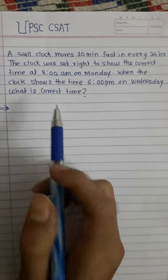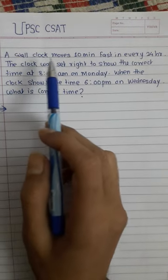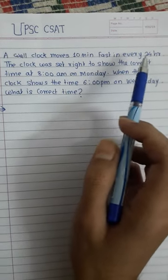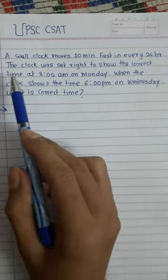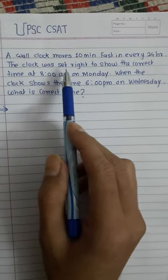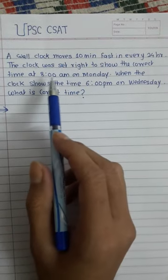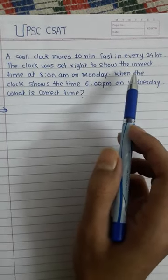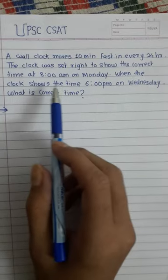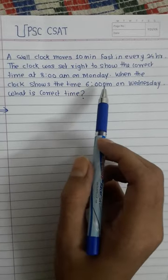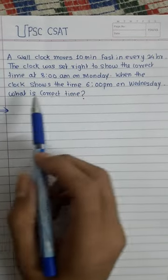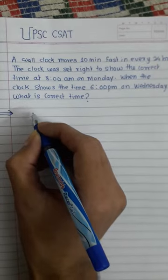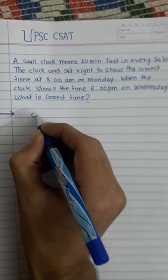Welcome friends. Today we will solve this question: a wall clock moves 10 minutes fast every 24 hours. The clock was set right to show the correct time at 8 a.m. on Monday. When the clock shows 6 p.m. on Wednesday, what is the correct time?